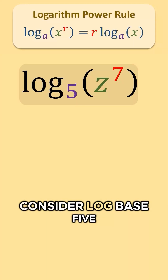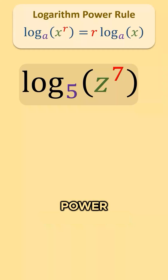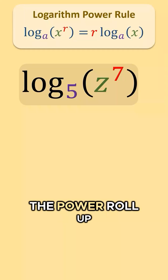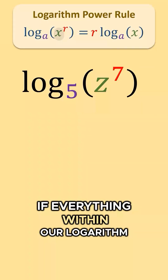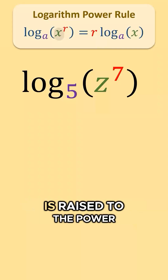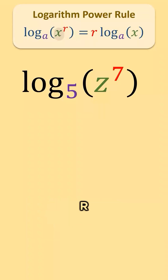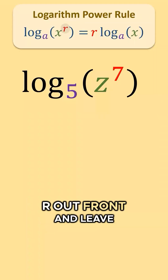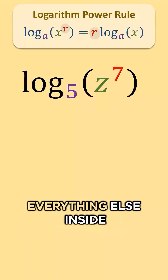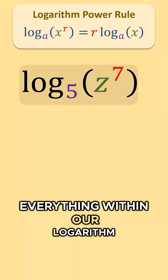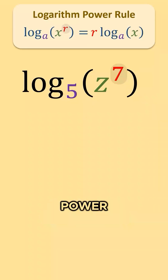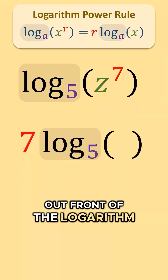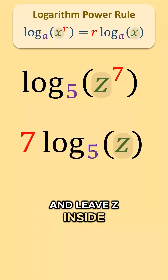Consider log base 5 of z to the 7th power. The power rule tells us that if everything within our logarithm is raised to the power r, we can bring the power r out front and leave everything else inside. Everything within our logarithm is raised to the 7th power, so we can bring 7 out front of the logarithm and leave z inside.